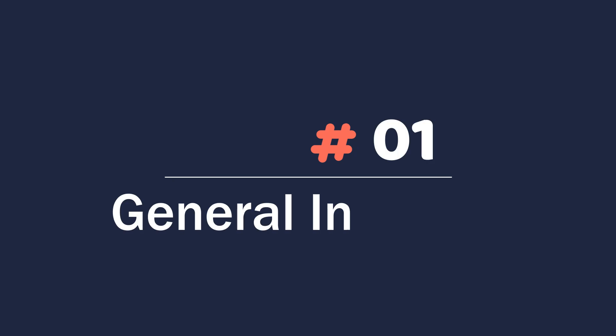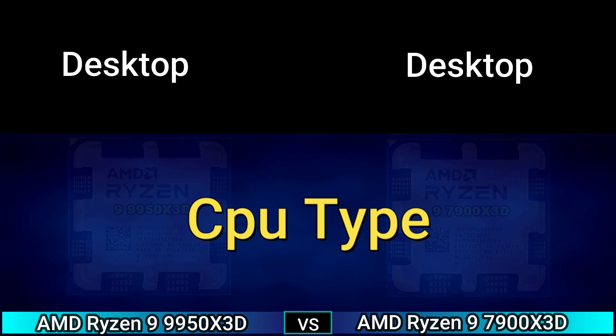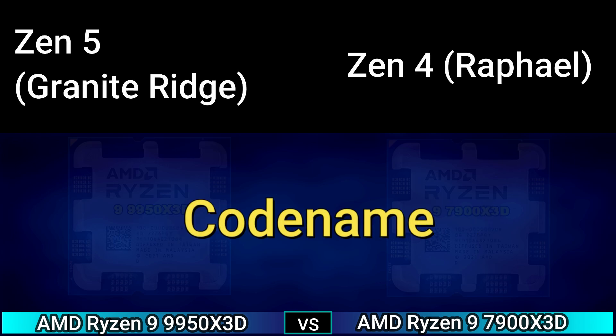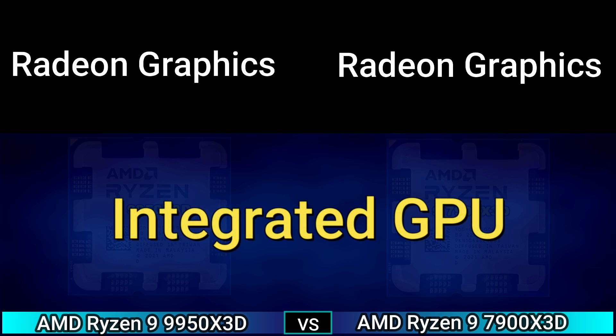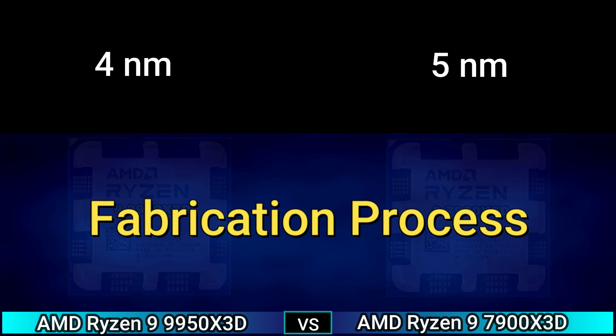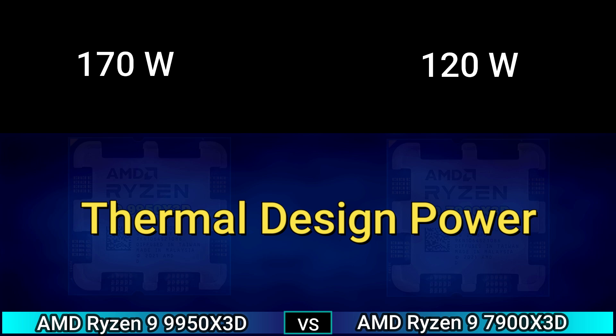General information: CPU type desktop, instruction set x86-64, code name Zen 5 and Zen 4, integrated GPU, random graphics, fabrication process 4 nanometer and 5 nanometer, thermal design power 170 watt and 120 watt.